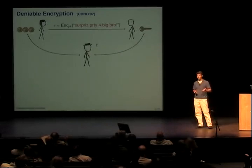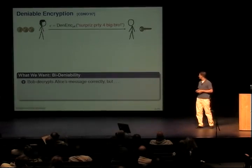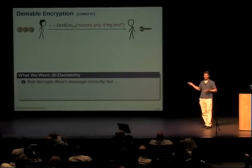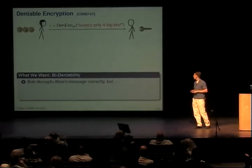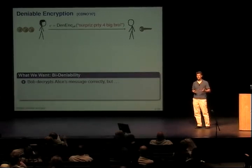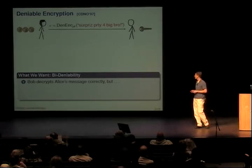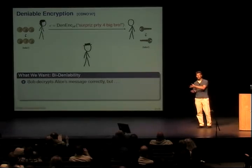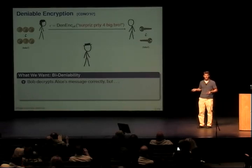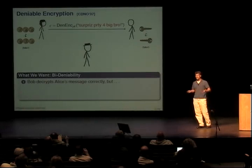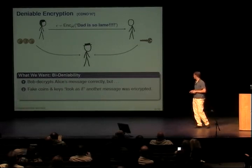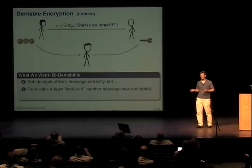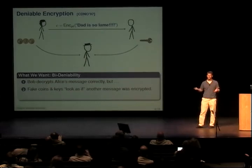So what we would like is something called bi-deniability — a property where Alice can send Bob an encrypted ciphertext using some kind of deniable encryption process, and Bob should be able to decrypt Alice's message correctly. But if big brother comes around and tries to twist their arm, Alice and Bob can prepare some fake encryption coins on the left and a fake secret key on the right, so that when big brother does come around, it magically looks like an innocuous message. The fake coins and keys actually make it look as if another message had been encrypted, honestly.